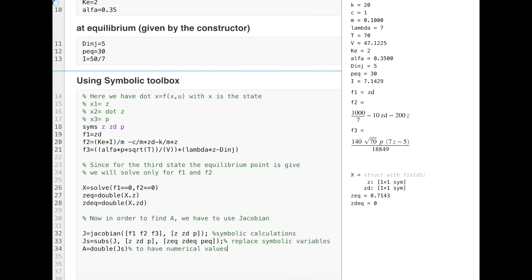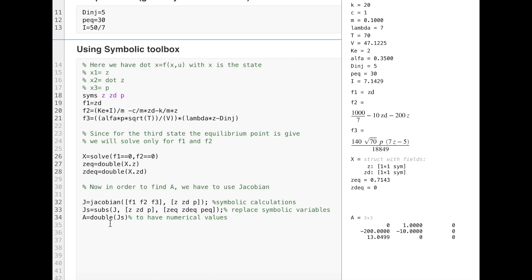Then when we find the Jacobian, we will substitute the values using subs, and we will use double to find a numerical value. This is the A matrix that we found by hand. I will copy the expression and as you will see it is the same expression.